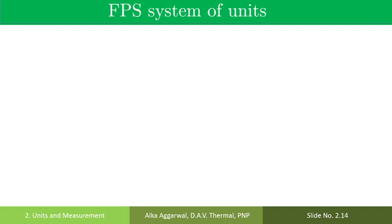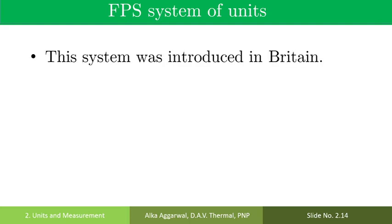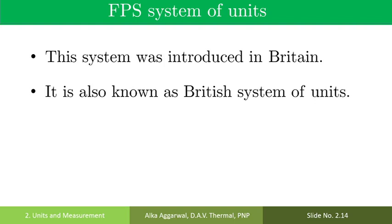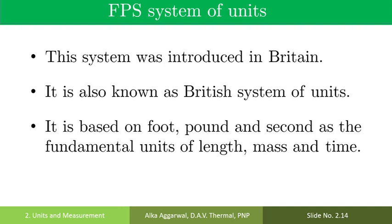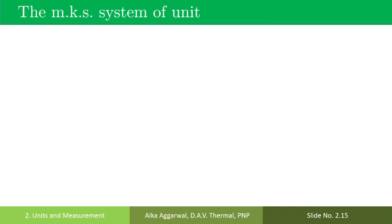The next system of units is FPS. This system was introduced in Britain. It is also known as the British system of units. It is based on foot, pound, and second as the fundamental units of length, mass, and time. The drawback of the FPS system is that it loses its popularity because of inconvenient multiples and sub-multiples involved in its conversion.